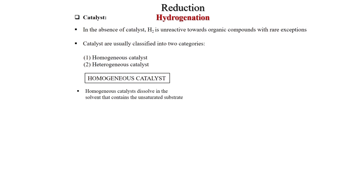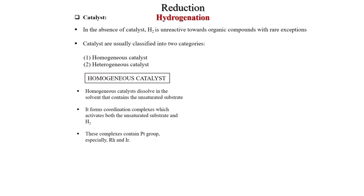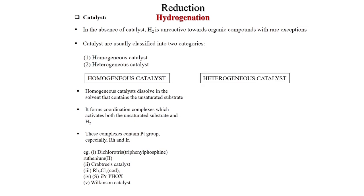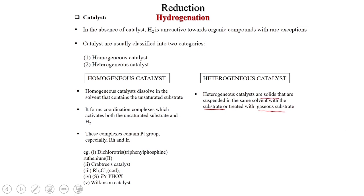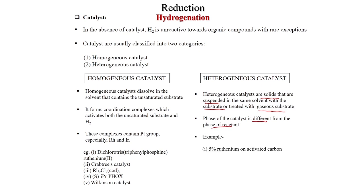Hydrogen is unreactive towards organic compounds with rare exception. Catalysts are usually classified into two categories: homogeneous and heterogeneous. In a homogeneous catalyst, the catalyst dissolves in the solvent containing the unsaturated substrate. It forms coordination complexes which activate both the unsaturated substrate and hydrogen. These complexes contain platinum-group metals, especially rhodium and iridium — for example, dichloro-bis(triphenylphosphine)ruthenium (Crafts catalyst), [Rh(COD)(py)(PCy3)]PF6 (Crabtree catalyst), and Wilkinson's catalyst. Heterogeneous catalysts are solids suspended in the same solvent as the substrate, such as 5% ruthenium on activated carbon, 1% platinum on alumina, and Raney nickel.